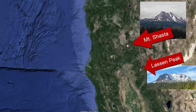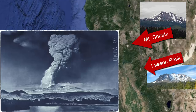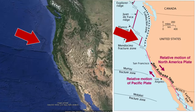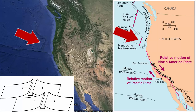The most recent eruption in that area was the explosive eruption depicted in this image of Mount Lassen on May 22, 1915. What happens to the seafloor spreading center off Northern California?